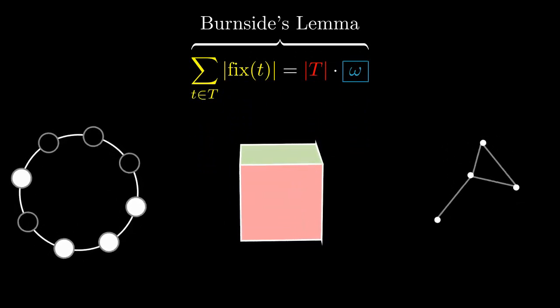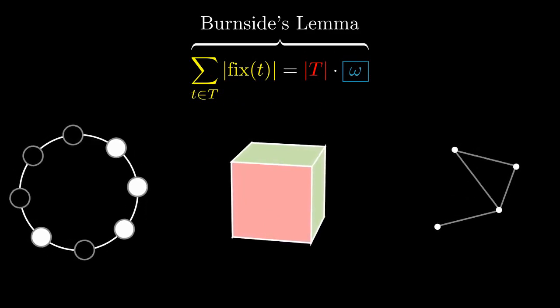faces of a cube, which has three-dimensional symmetry, and even unlabeled graphs, which have permutation symmetry.